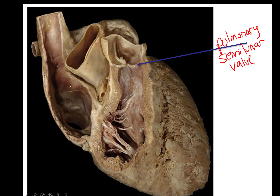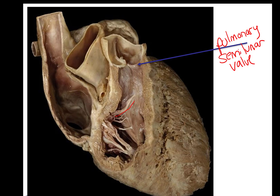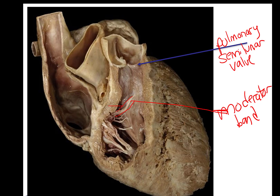Looking into the right ventricle here — they've cut it away so you can see the chordae tendineae. You can also see this structure you'll have to find in the sheep dissection — it's called the moderator band. It's a small muscle connecting the interventricular septum to the right wall of the right ventricle. It is thought to speed up the rate of the action potential, and it is only found in the right ventricle.